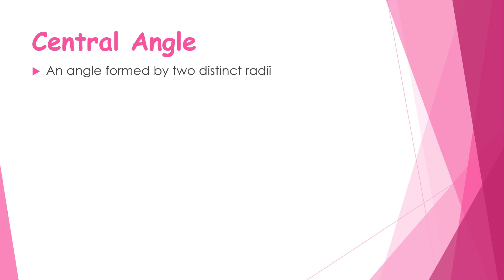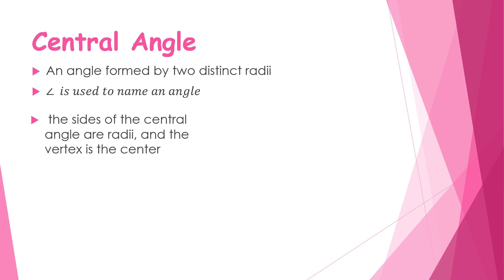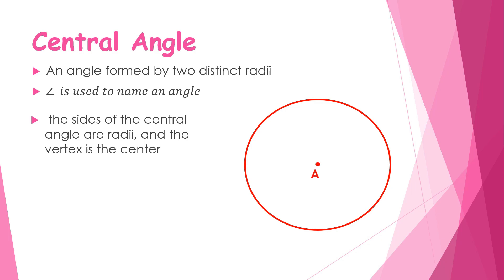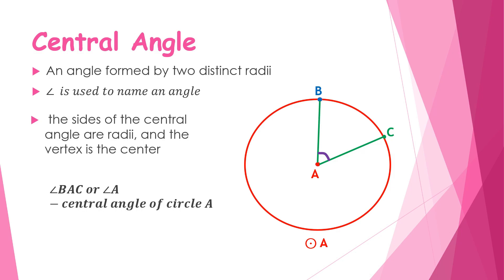The last term is central angle — an angle formed by two distinct radii. The sides of the central angle are the radii and the vertex is the center. On Circle A, with points B and C on the circle, connecting B to A and C to A forms two radii, creating a central angle. Therefore, angle BAC is a central angle of Circle A.